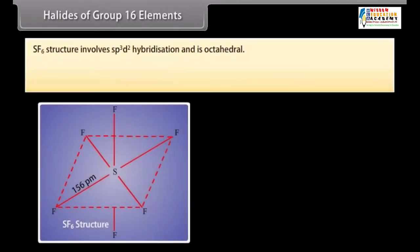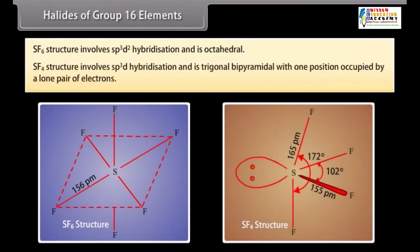SF6 structure involves sp3-d2 hybridization and is octahedral. SF4 structure involves sp3 hybridization and is trigonal bipyramidal with one position occupied by a lone pair of electrons.